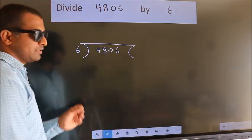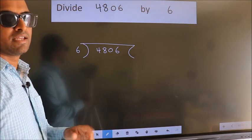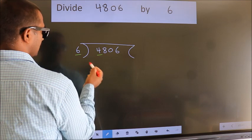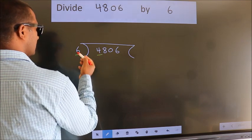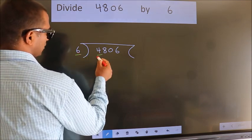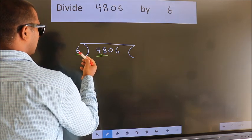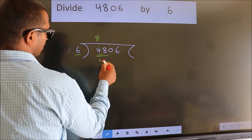This is your step 1. Next, here we have 4, here 6. 4 is smaller than 6, so we should take two numbers: 48. When do we get 48? In the 6 table, 6 eights is 48.